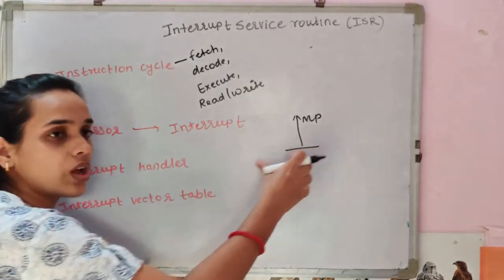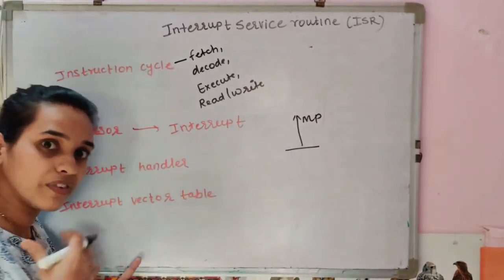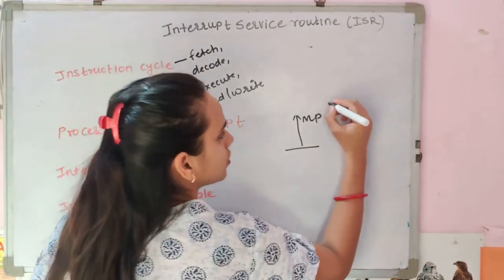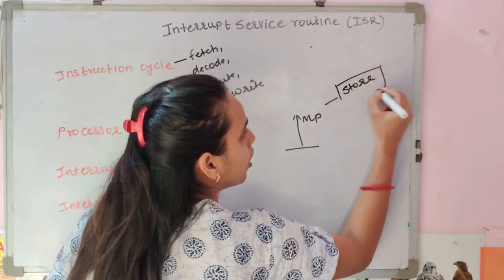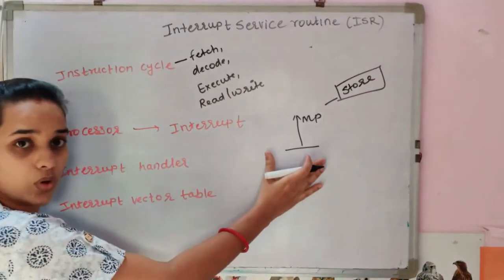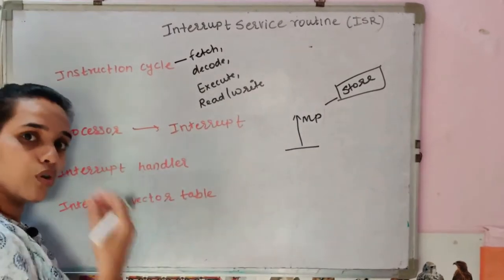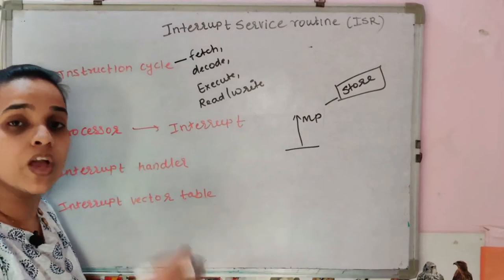After stopping, this main program which has stopped here - its configuration, its address, its path - it will store it somewhere. It will store it in the register. After storing it, it will load the interrupt program counter. How will it load? How will it process the signal?